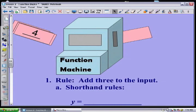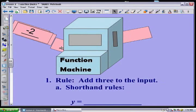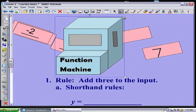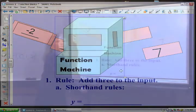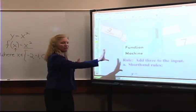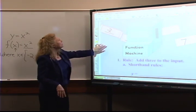In this particular case we're going to look at a function machine where the rule is: add three to the input. So if I start out with four and put it into the machine, within this function machine it's going to add three, so I would be bringing out a seven.